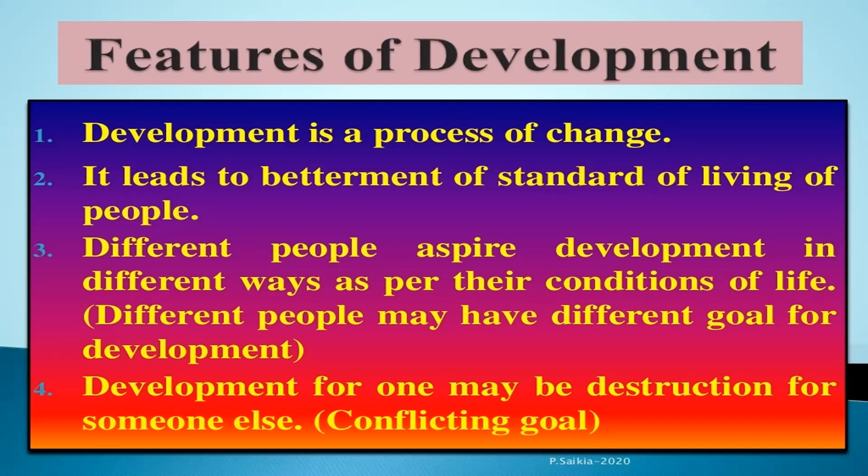For example, a girl expects as much freedom and opportunity as her brother and that he also shares the household work — but the brother may not like this. Similarly, to get more electricity, industrialists may want more dams, but this may submerge the land and disrupt the lives of people who are displaced, like the Adivasis. They might prefer small shed dams or tanks to irrigate their land. So two things are clear: different people can have different developmental goals, and what may be development for one may be destructive for another.